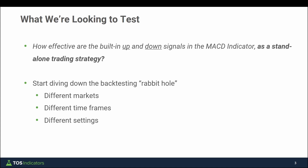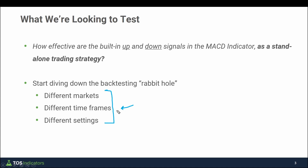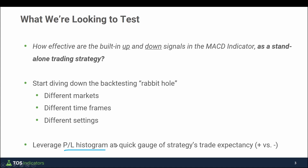What I'm hoping this introduces you to is this idea of a back testing rabbit hole. We'll go through a few different markets, which will show how similar markets can have very different P&L structures — same with different timeframes and different settings. There are almost infinite permutations you can have, so it's important to structure back tests that align with your particular trading style. We can also leverage the P&L histogram inside of Thinkorswim, which gives a very quick gauge as to whether this idea has a positive or negative trade expectancy.